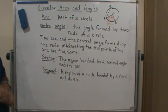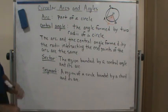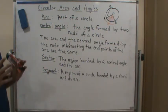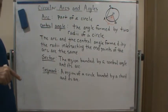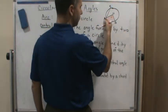I shaded in what we would call the sector of the circle. And a segment is the region of the circle that is bounded by a chord and its arc. For example, this would be chord AC.